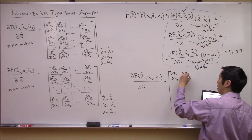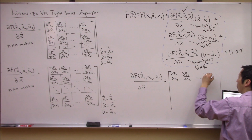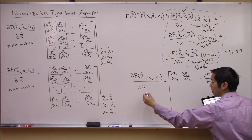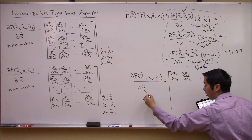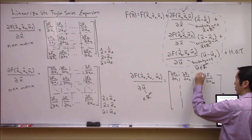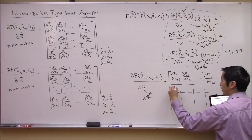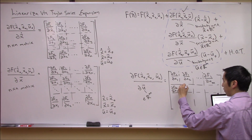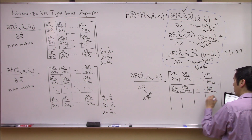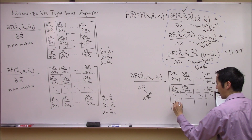This is our linear system — our familiar linear time-invariant form. The A matrix is negative E inverse A-prime, and the B matrix is negative E inverse B-prime. This is what we were looking for. All we need to do is calculate those Jacobian matrices — E, A-prime, and B-prime — which means calculating many partial derivatives: n-squared terms in E, n-squared in A-prime, and n times m in B-prime.